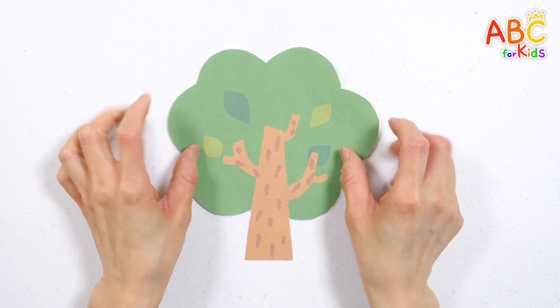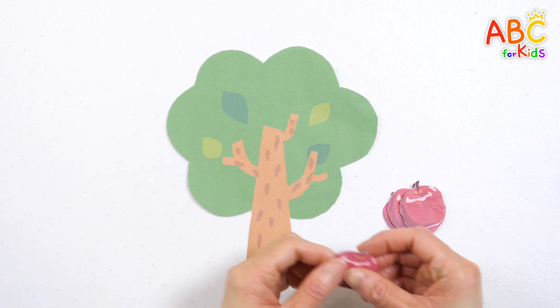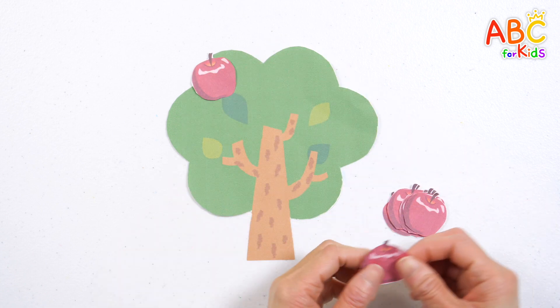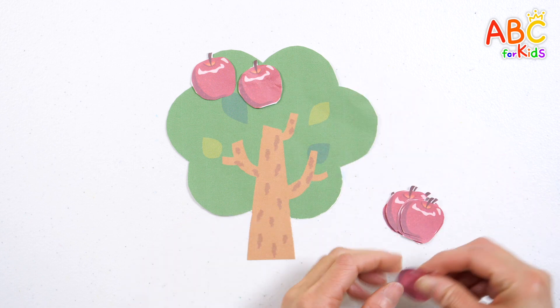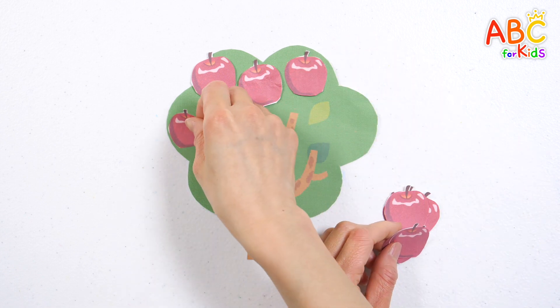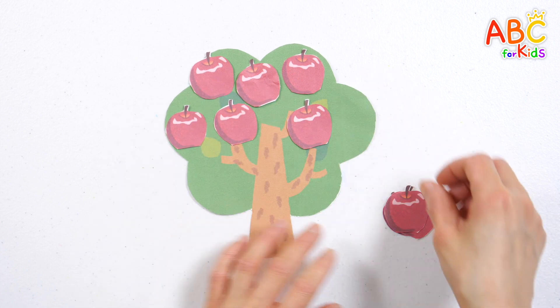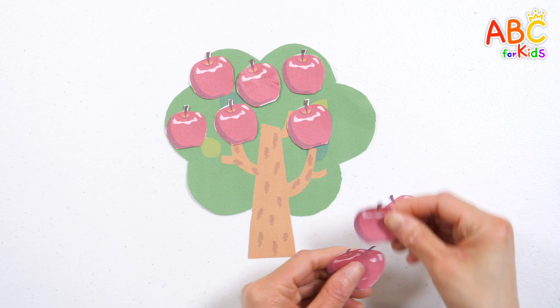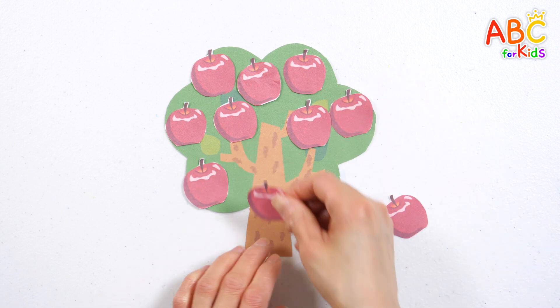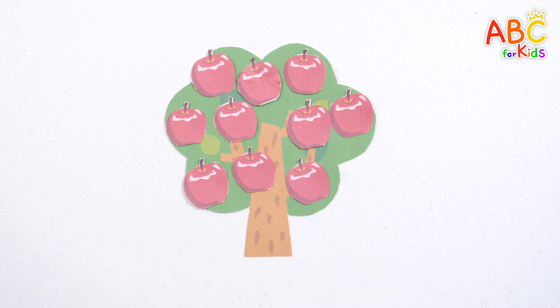There is one tree! Shall we learn how to count by attaching apples to the tree? One, two, three, four, five, six, seven, eight, nine, ten. Ten apples on the tree!